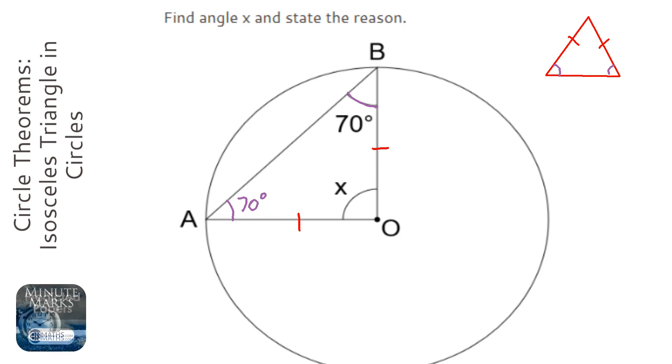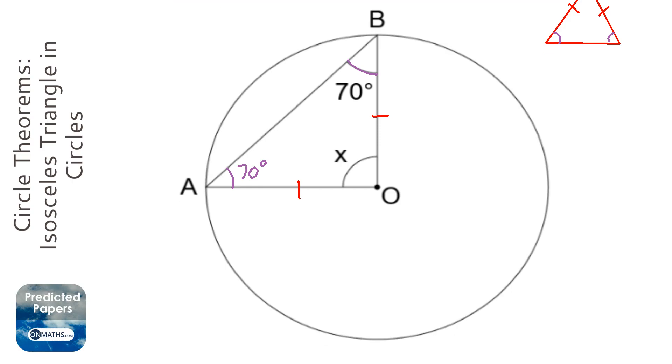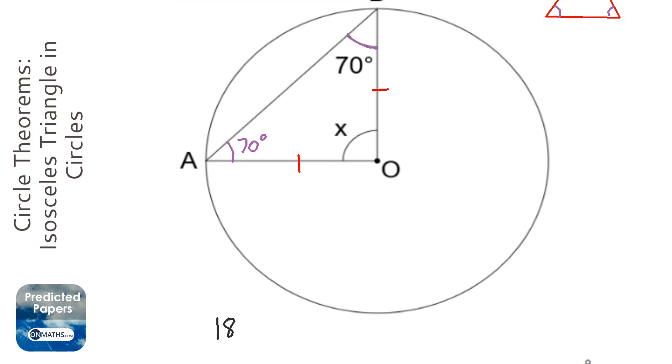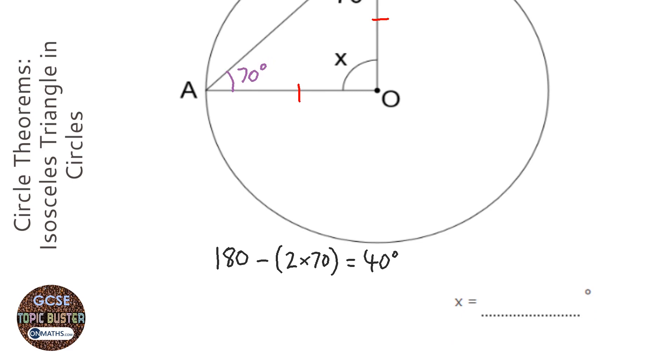Now if those two are 70, that's 140 in total. So we're going to do 180, which is angles in a triangle, take away two lots of 70, which equals 140. And 180 take away 140, so that equals 40 degrees.